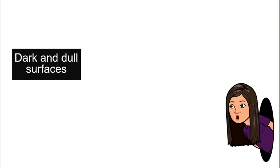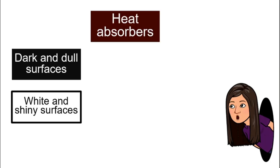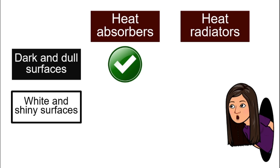So here is our overall summary. We have two types of surfaces: one will be dark and dull, second will be white and shiny. So for heat absorbers, dark and dull surfaces are better heat absorbers compared to white and shiny surface. How about heat radiators? It is also the dark and dull surfaces that will be better heat radiators compared to white and shiny surfaces. So this is overall the concept that we are talking about.